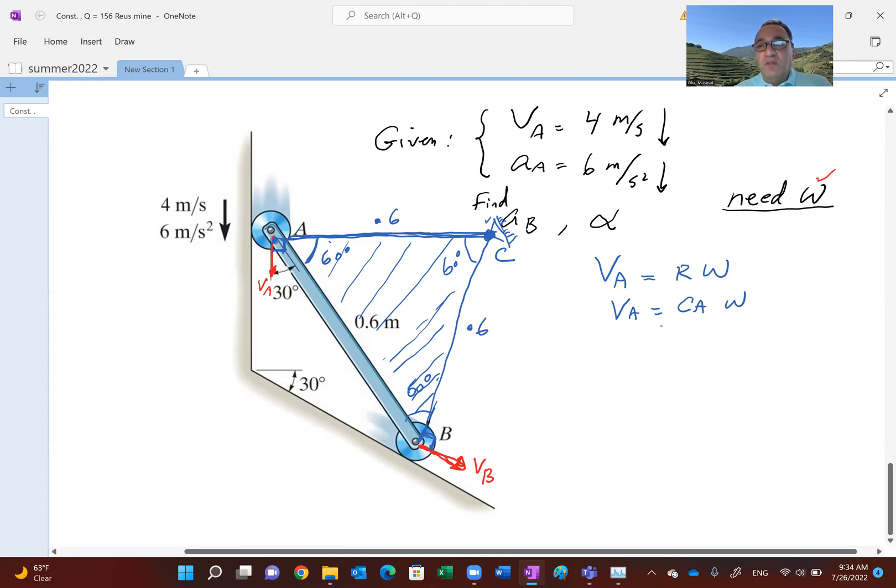All right. So if I put four here and 0.6 here, then omega is equal to four divided by 0.6. And that, I believe, is 6.67. Rounding it off, 6.666, so on. That's radians per second. Clearly, this body, just looking at velocity of A and B is rotating like that. So it's rotating counterclockwise.